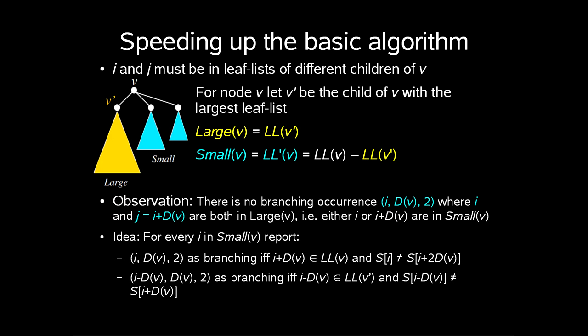We observe here that there is no branching occurrence (i, D(v), 2) where i and j, which is i plus D(v), are both in Large(v). So for example, either i or i plus D(v) are in Small(v).